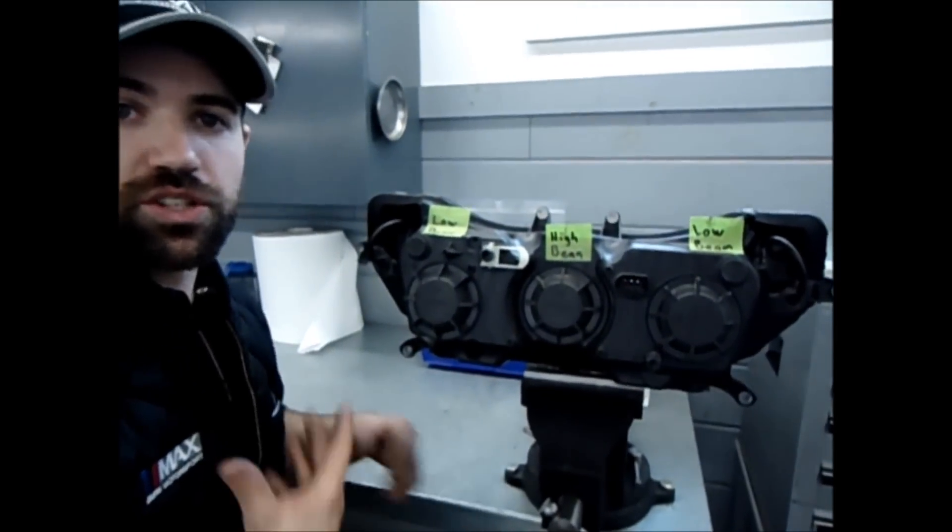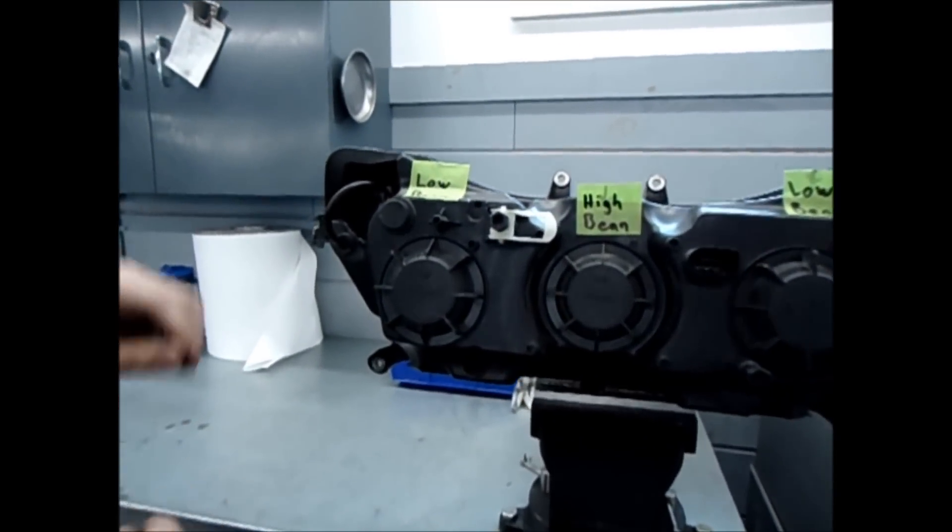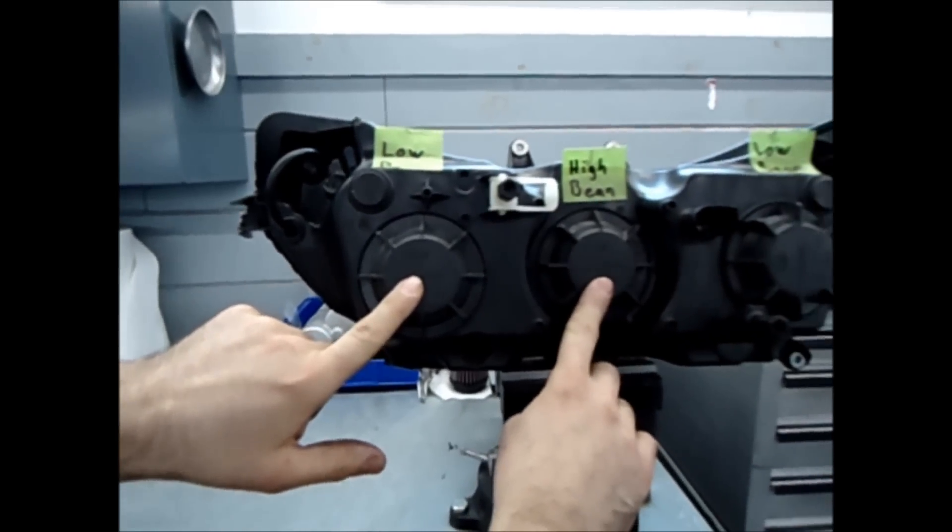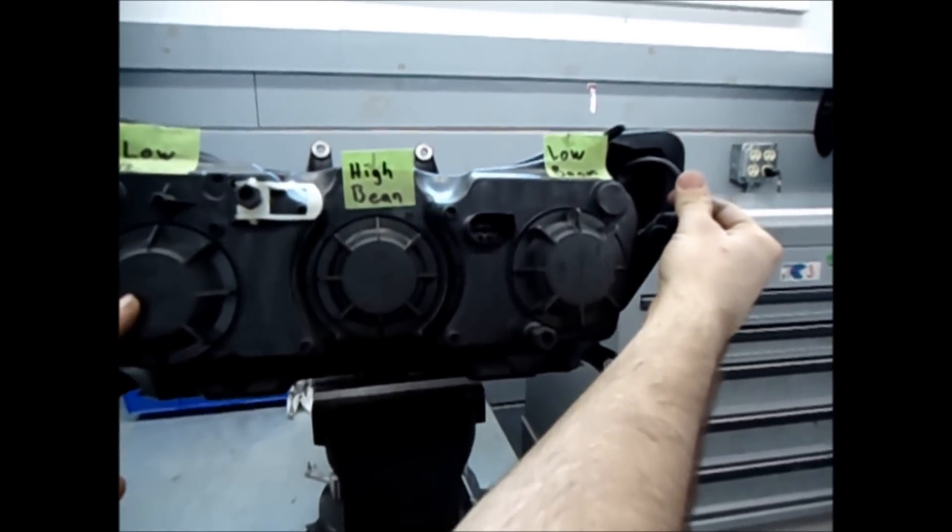Remove the headlight assembly off of an R1200RT to show you a better location. Starting at the left, here's the running light, low beam, high beam, the other low beam, and the second running light.